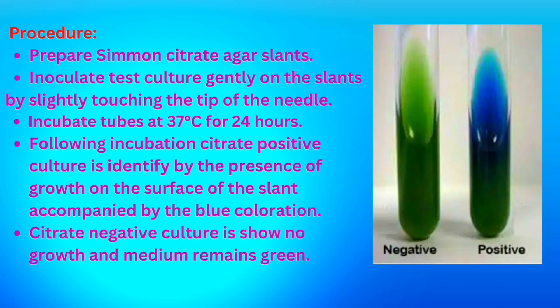For the procedure, first prepare Simmons citrate agar slants. Inoculate the slants with the test culture. After incubation, citrate-positive cultures show a blue color change on the surface of the slant, while negative results remain green color. In the picture shown, the first is a negative result and the second is a positive result where the surface of the slant turns blue, indicating the bacteria are utilizing citrate.